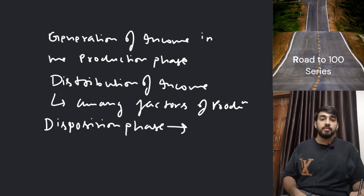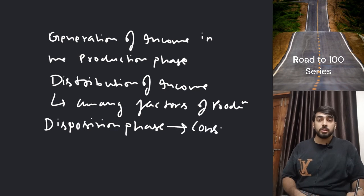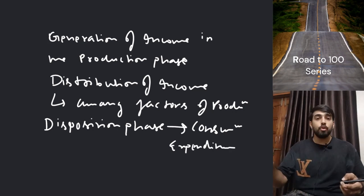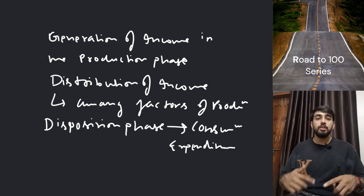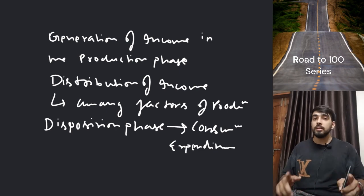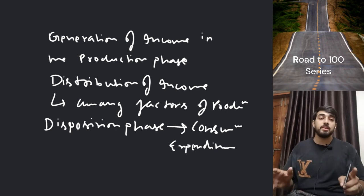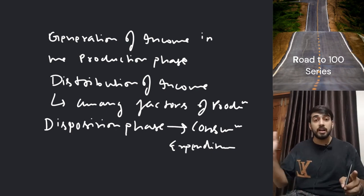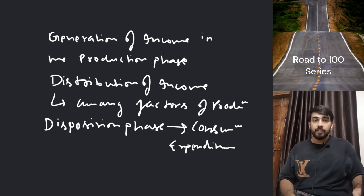Basically, the disposition phase is all about consumption expenditure — which income we will be able to use. There are no savings in the economy.